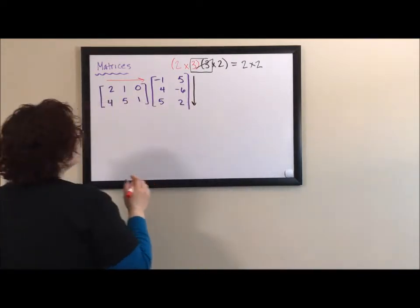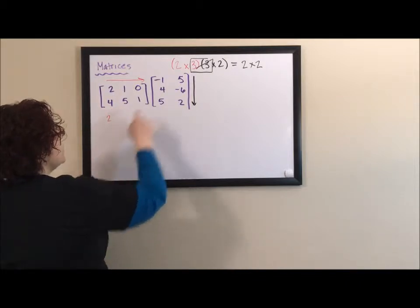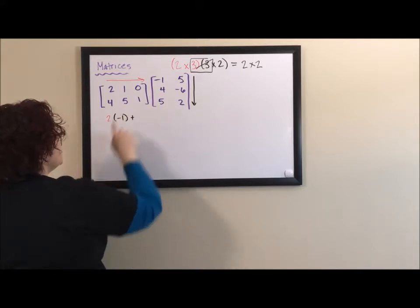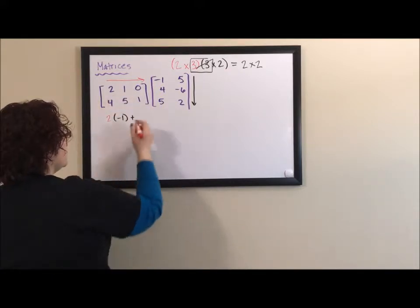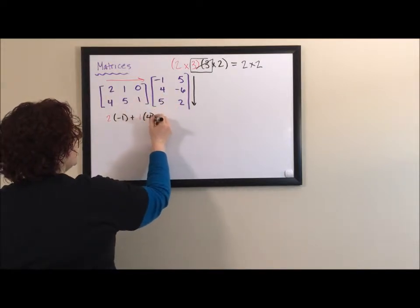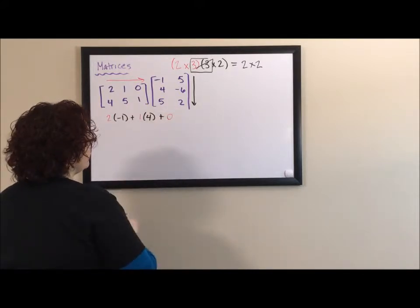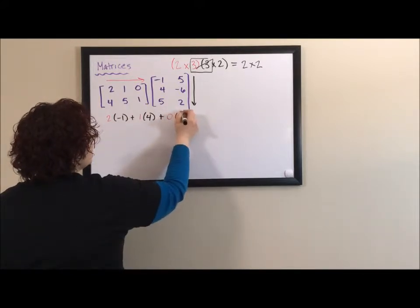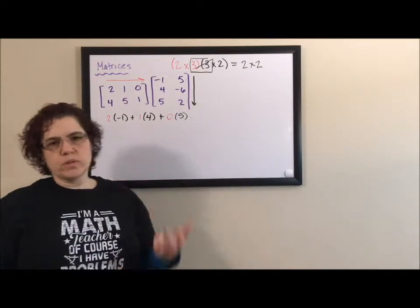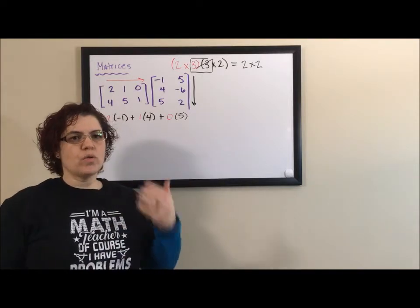So what this looks like is we take the two of the first matrix and multiply it by the negative one of the second matrix. We add to that the one of the first matrix — that second element — with this four, the second element. We add to that the zero times the five. I'm going to leave the zero in there because I want to see the whole pattern. After I multiply and add these, I'll get the element in the solution matrix for the first row, first column.